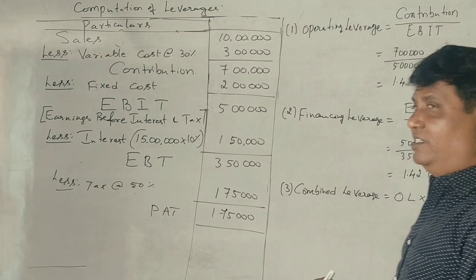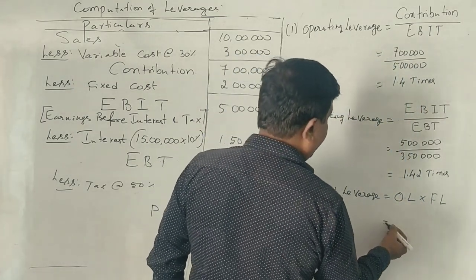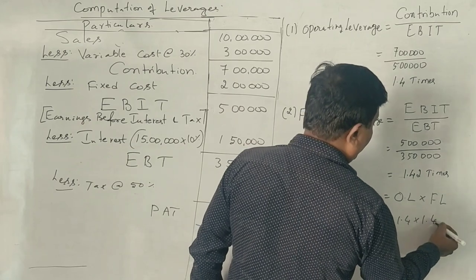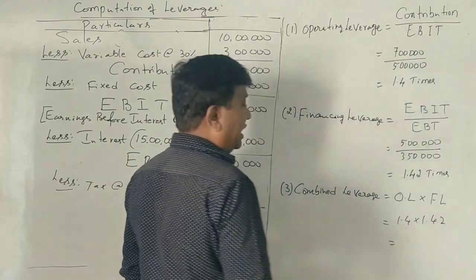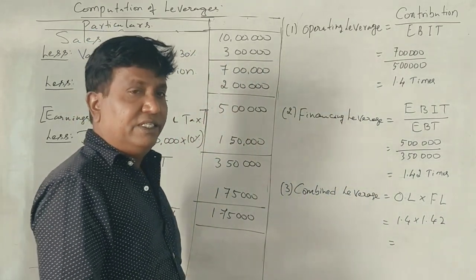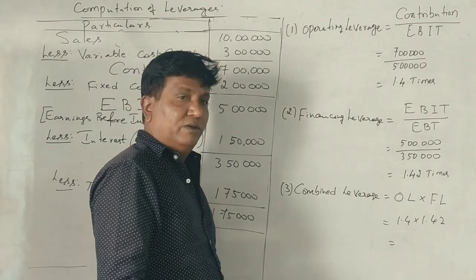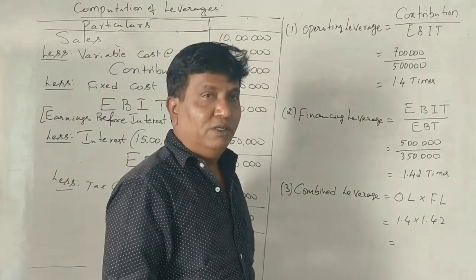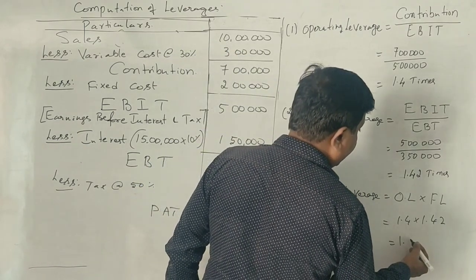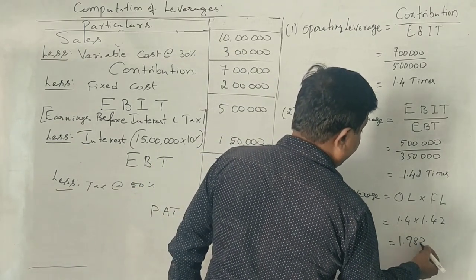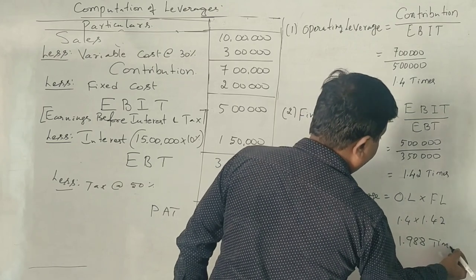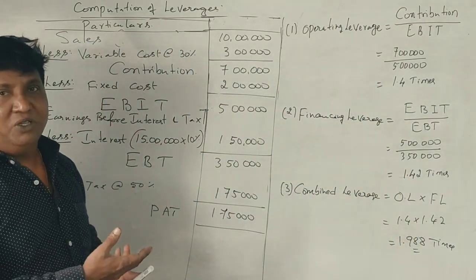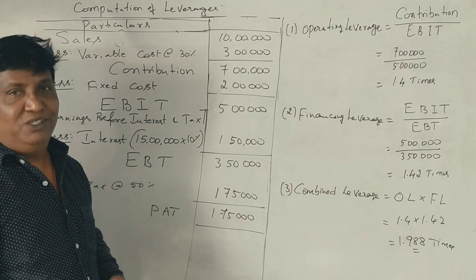The last leverage is the Combined Leverage. Operating leverage is 1.4 and financial leverage is 1.42. Multiplying both gives 1.988, approximately 2 times. So for this question you will get 6 marks. It is from the year 2019 — so simple!